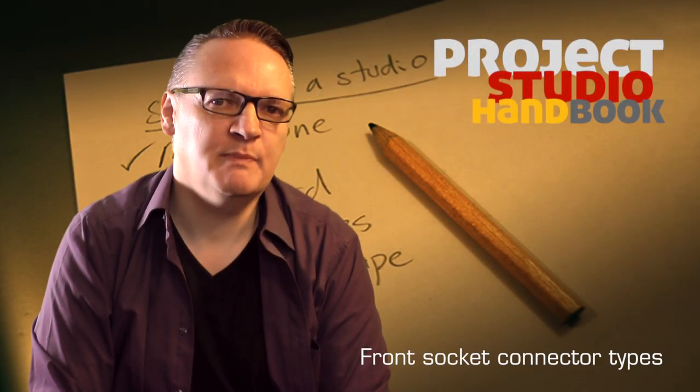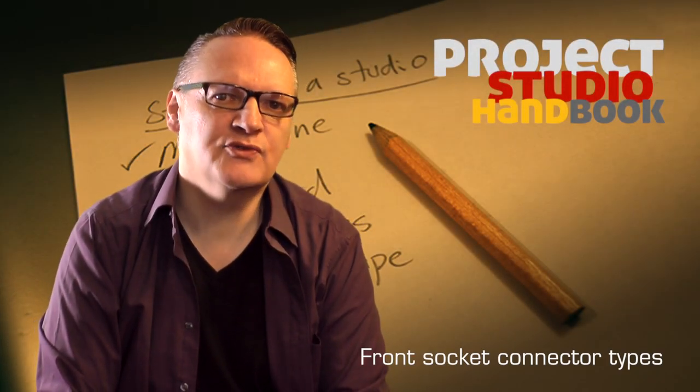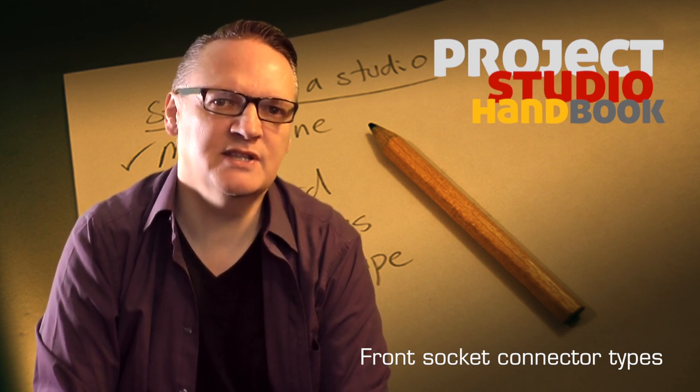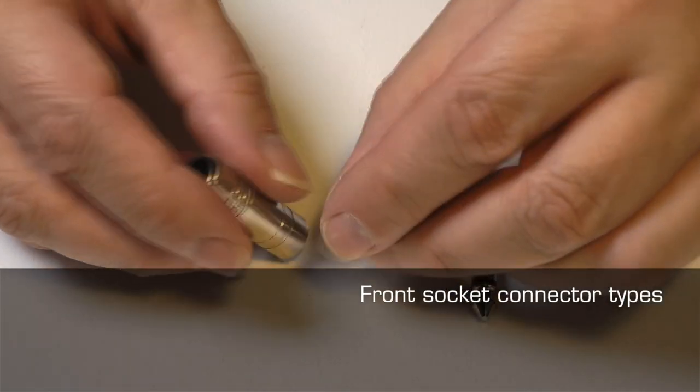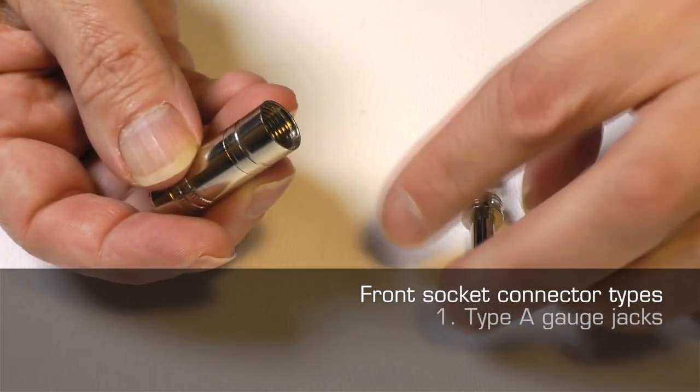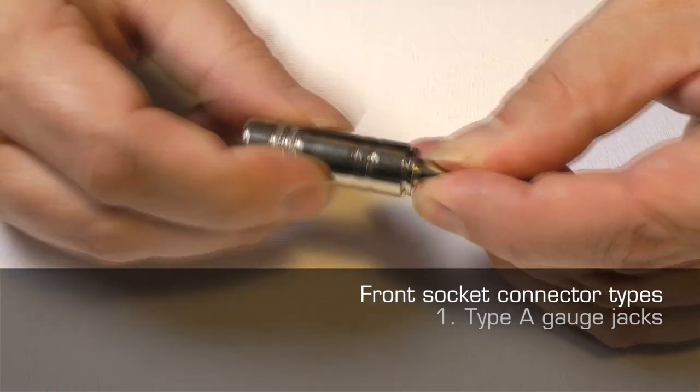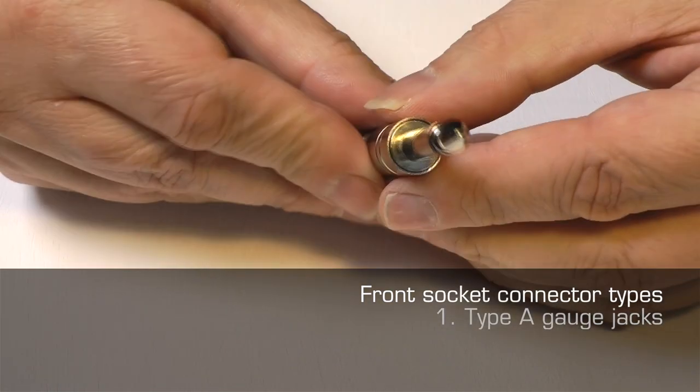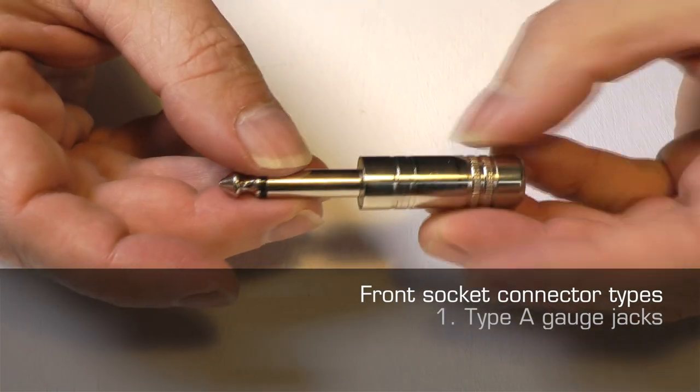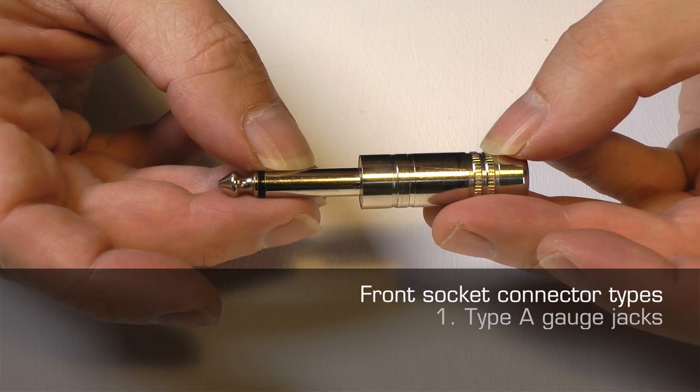Audio patch bays may be categorized by the three different front panel connector types they use. Firstly, type A jacks. These use the standard musical instrument keyboards, guitars, etc. and semi-pro recording equipment quarter inch A gauge jack plug connector.